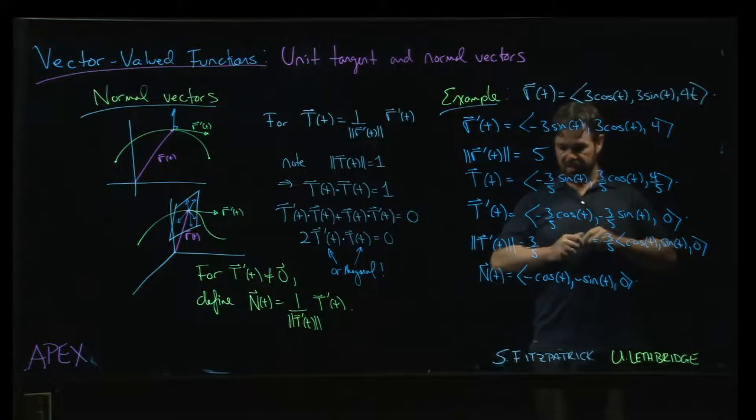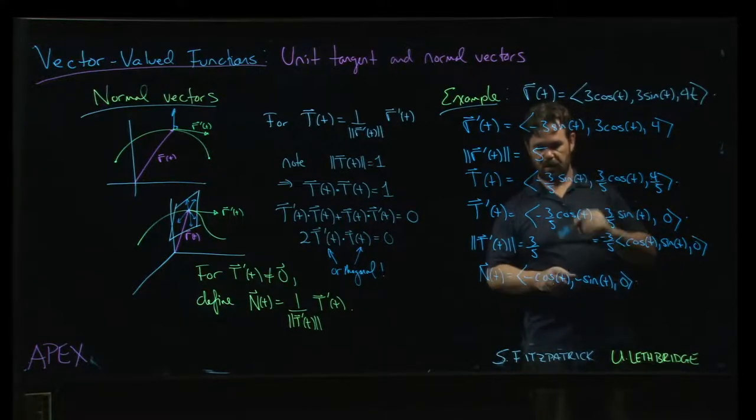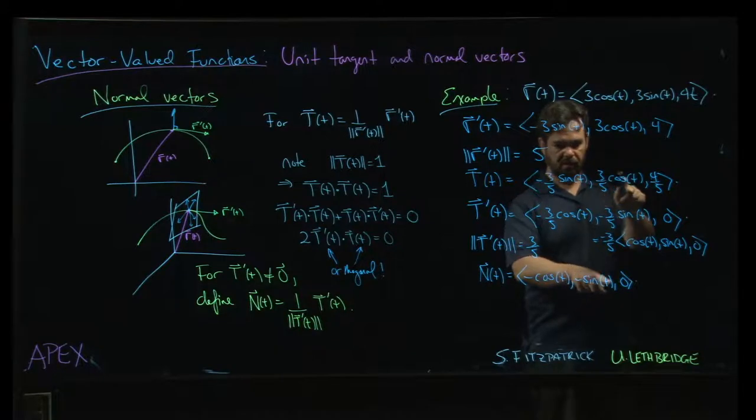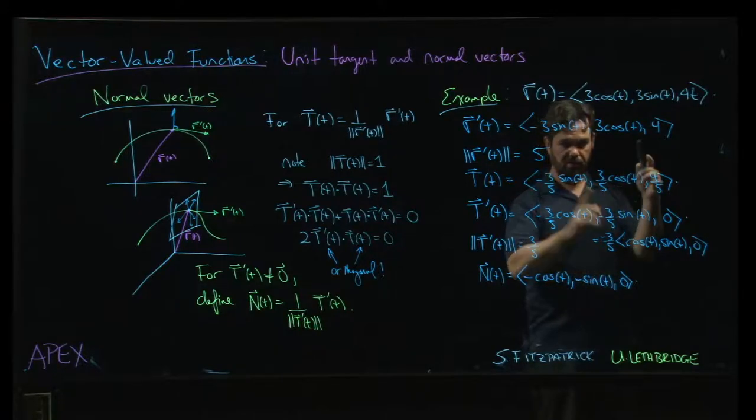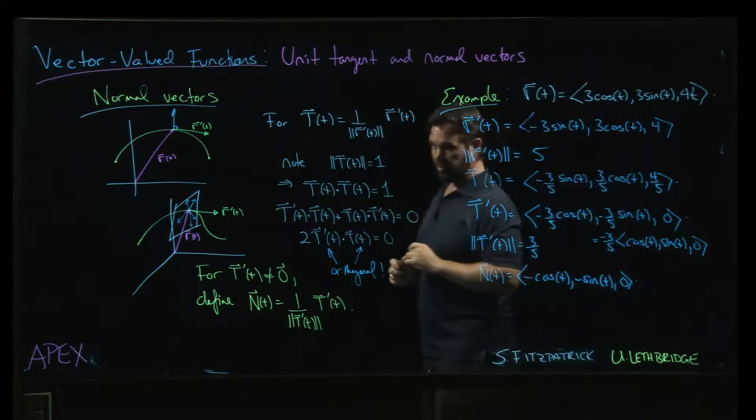And you can check that is indeed a normal vector if we take the dot product with the unit tangent. We get 3 fifths sine t cosine t minus 3 fifths sine t cosine t plus 0. The dot product gives 0 for all possible values of t.